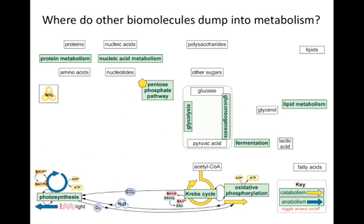The last big topic left to discuss in the metabolism lecture series is where the other biomolecules dump into the metabolic processes. Glucose, a six-carbon molecule, gets broken down into pyruvic acid, a three-carbon molecule, during glycolysis. Pyruvic acid is decarboxylated to become acetyl-CoA, a two-carbon molecule, and enters the Krebs cycle, where it is further oxidized to carbon dioxide. The NADH and FADH2 produced during the Krebs cycle supply electrons for the electron transport chain, which ultimately generates a great deal of ATP.